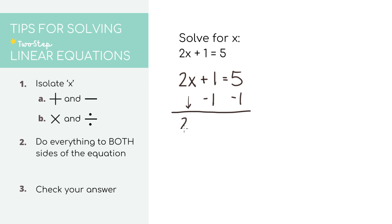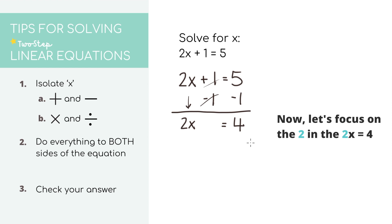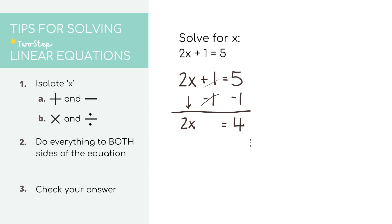So let's subtract one from the right side as well. When we put it all together we get that 2x equals 4. We don't quite have our final answer yet because there's still that 2 in front of the X, but this now looks just like a one-step equation. To get rid of the 2 being multiplied by X we do the opposite and divide by 2 on both sides, giving us our final answer: X equals 2.